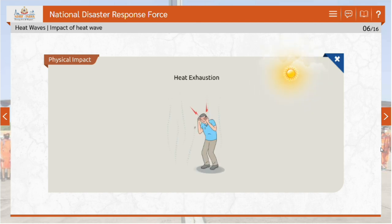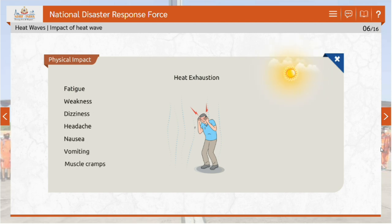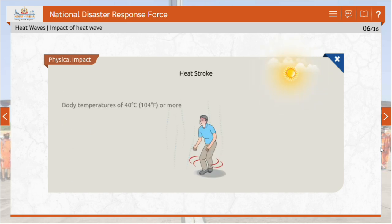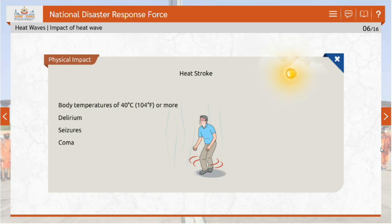For heat exhaustion, the symptoms might be fatigue, weakness, dizziness, headache, nausea, vomiting, muscle cramps and sweating. For heat stroke, body temperatures of 40 degrees Celsius (104 degrees Fahrenheit) or more along with delirium, seizures or coma characterize this potentially fatal condition.